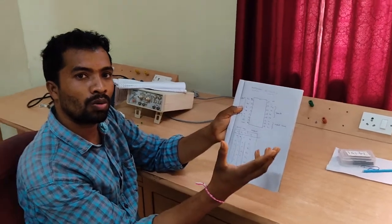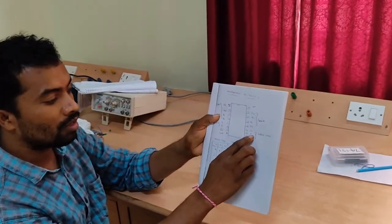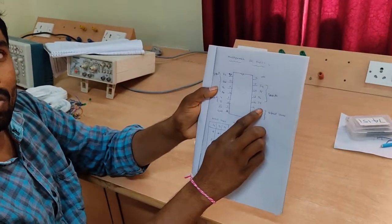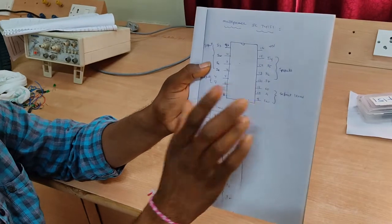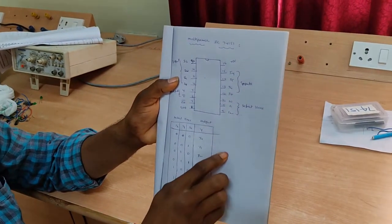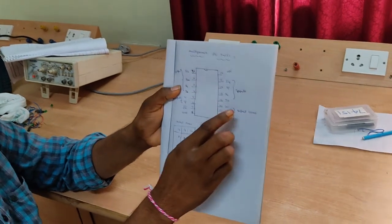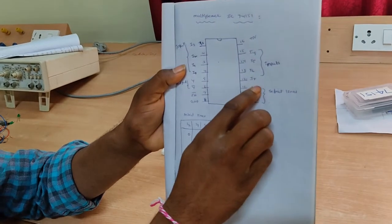For example, if you want to do the 4x1 multiplexer, then S2 is grounded. S0 and S1, you have to take the 2 selection lines. For 4x1 multiplexer, 2 selection lines are taken and S2 is grounded. For 2x1 multiplexer, S1 and S2 are grounded. S0 is taken, that is single selection line.